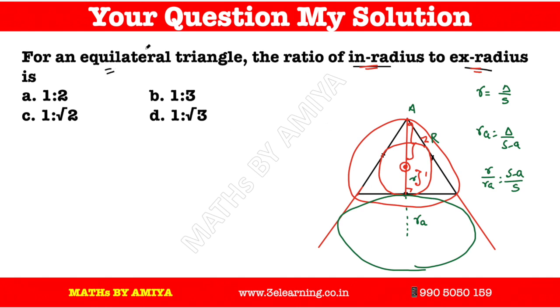For side length a, s equals 3a by 2. This becomes 3a by 2 minus a upon 3a by 2. If we solve this, it will be a by 2 and the denominator will be 3a by 2. So all of these cancel out to 1 by 3, which is option B. This is the answer.